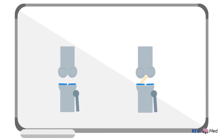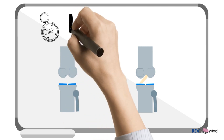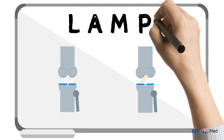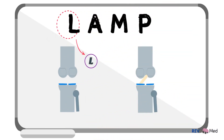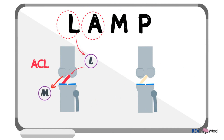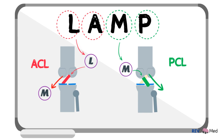Remember the direction the ligaments travel using the acronym LAMP: L for lateral and A for ACL — the ACL moves medially; M for medial and P for PCL — the PCL moves laterally.